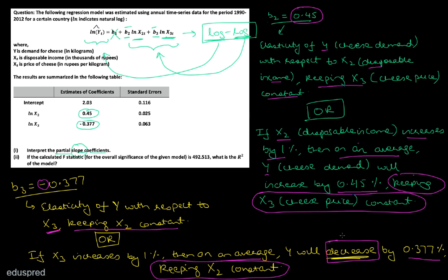In other words, if X3 increases by 1%, then on average, Y will decrease by 0.377%, keeping X2 constant. It is decreasing because we have a negative sign. In the previous case it was increasing because B2 is positive 0.45. This is how you interpret the partial slope coefficients in a log-log model.